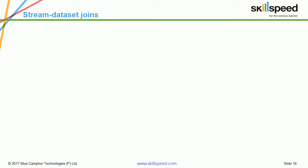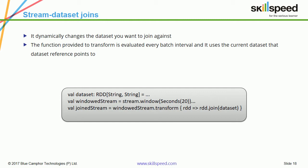For stream-dataset joins, it dynamically changes the dataset you want to join against. The function provided to transform is evaluated every batch interval and uses the current dataset that the dataset reference points to.